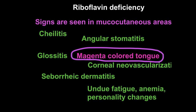One interesting finding in riboflavin deficiency is corneal neovascularization. Normally the cornea is avascular, which helps maintain its transparency. In riboflavin deficiency, new vessels grow from the sclera — the white part of the eye — into the cornea, which is the transparent part. These new vessels impair the transparency of the cornea, leading to opacity and impaired vision.